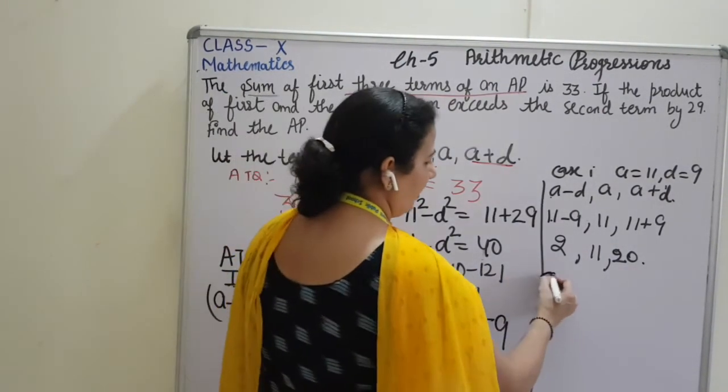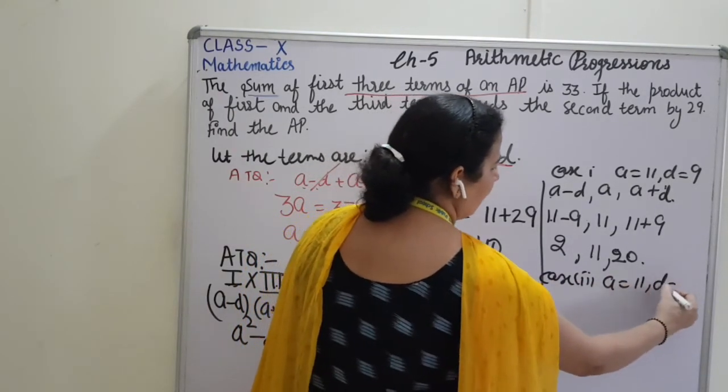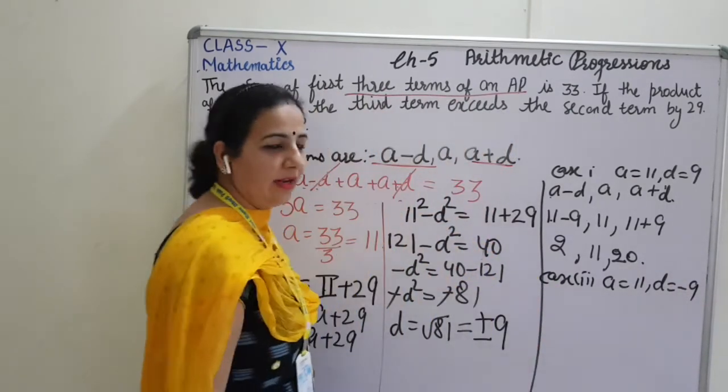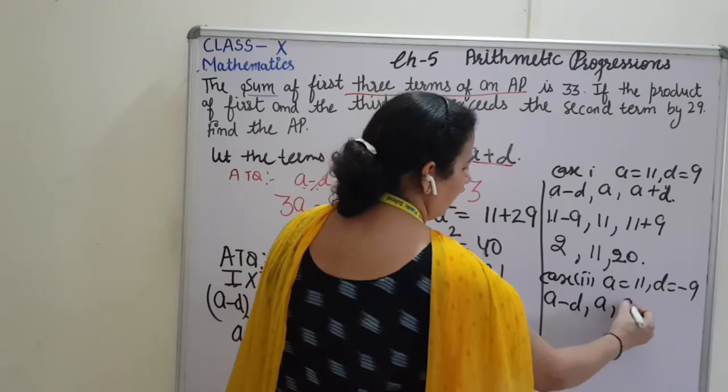But, if our D will be negative. Case 2: When A is equals to 11 and D, I have taken negative, then the terms will be A minus D, A, A plus D.